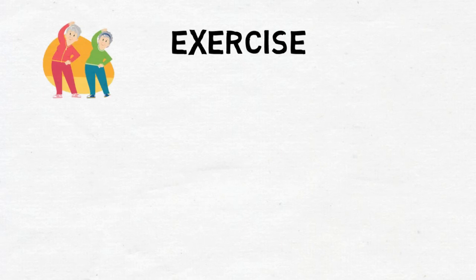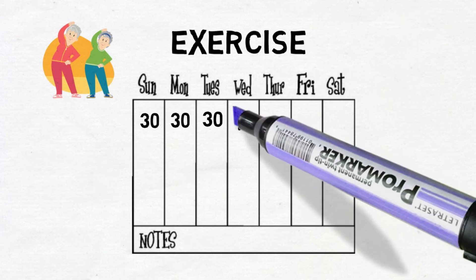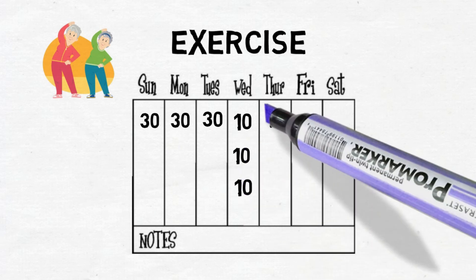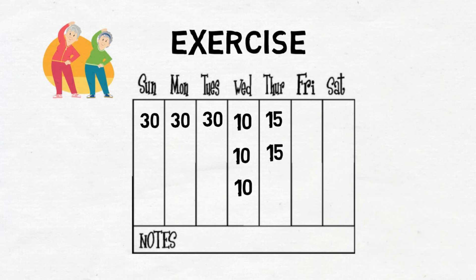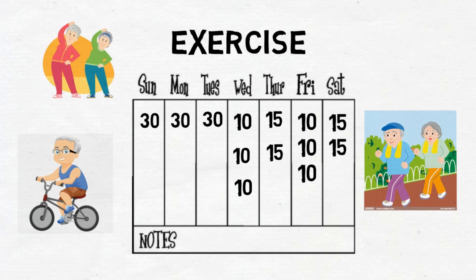Being physically active is an important part of a healthy lifestyle to help reduce risk of heart disease. Aiming for 30 minutes or more of moderate intensity physical activity or exercise on most days of the week can benefit your heart. You can build up to this if you are not able to do it straight away, and break it up into three 10-minute or two 15-minute lots if that is more achievable for you. Activities such as walking, bike riding, swimming, or playing sport can be good options.